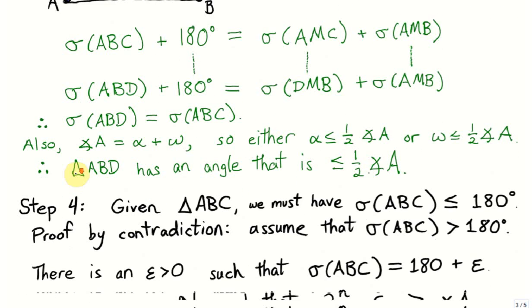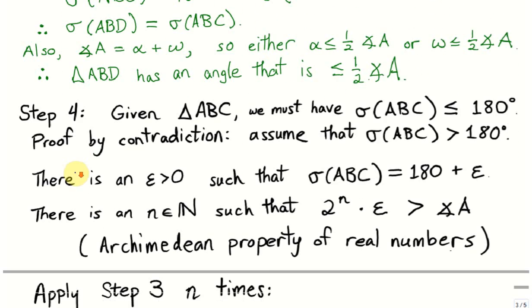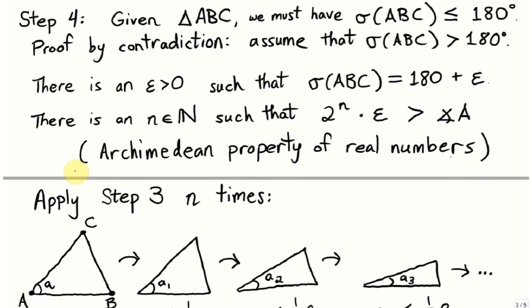Finally, step 4 is the last step in the proof of the Saccheri-Legendre theorem. Our goal is to prove that for any triangle ABC, the angle sum is less than or equal to 180 degrees. We use proof by contradiction: assume instead that the angle sum of triangle ABC is greater than 180 degrees. Then there exists some epsilon such that the angle sum equals 180 plus epsilon.